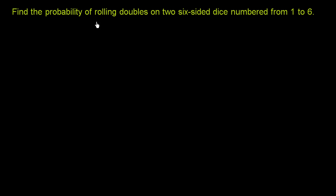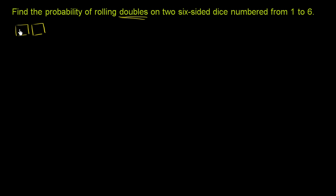Find the probability of rolling doubles on two six-sided dice numbered from 1 to 6. When they're talking about rolling doubles, they're just saying if I roll the two dice, I get the same number on the top of both. So for example, a 1 and a 1 — that's doubles.